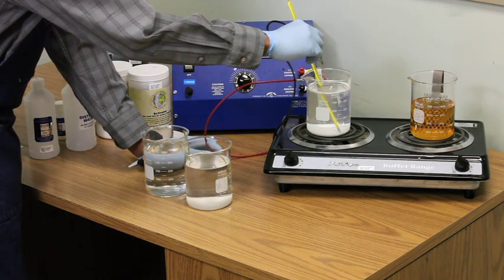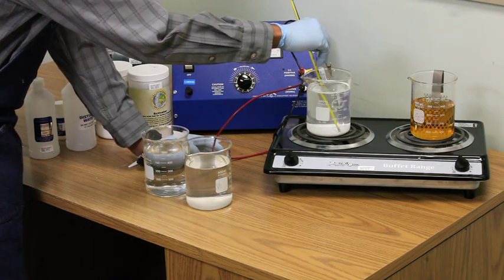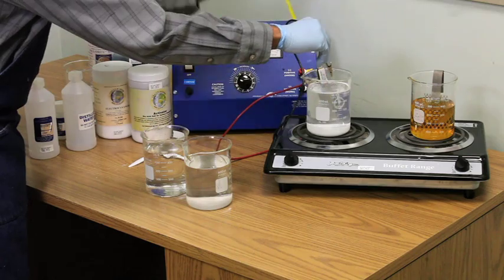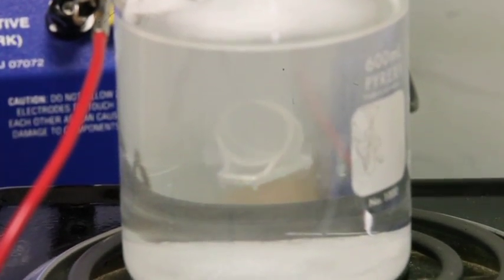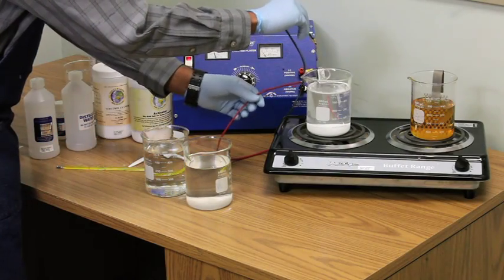Lower the piece into the electro cleaner for two minutes. Then remove and rinse in distilled water.